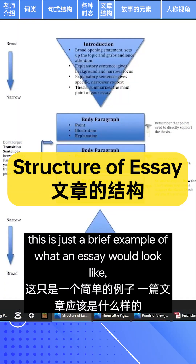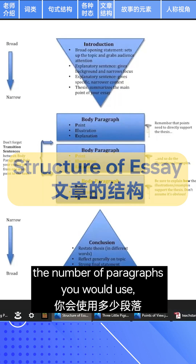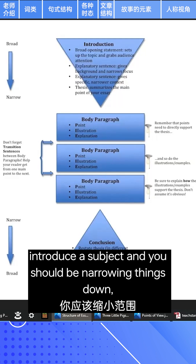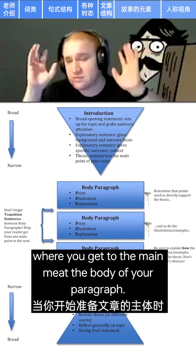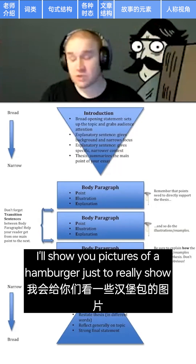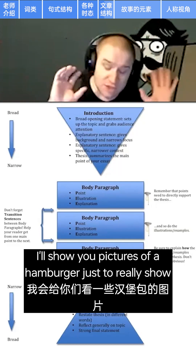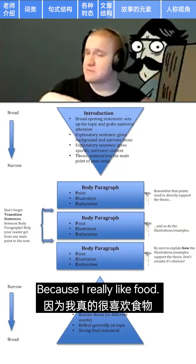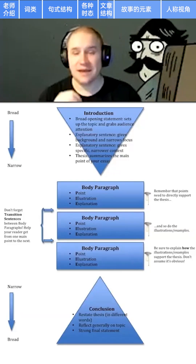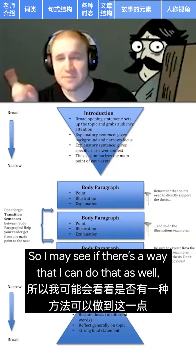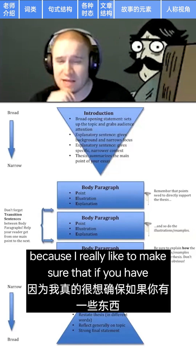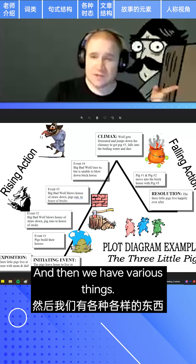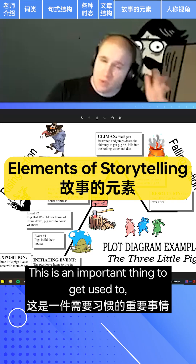Hopefully I won't confuse you more than necessary when we discuss tenses. This is just a brief example of what an essay would look like — the number of paragraphs you would use, the type of focus you would develop, and how you should start with your broadest point when you introduce the subject and narrow things down before you get to the body. I'll show you pictures of a hamburger to illustrate how we can think of sentence, paragraph, and essay structure as food — and since many of you play tennis and badminton, I may use that as a comparison too.